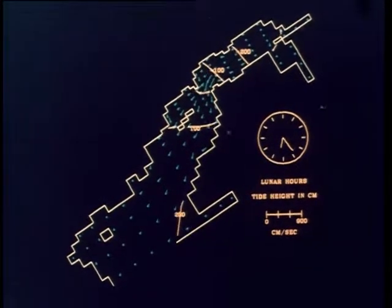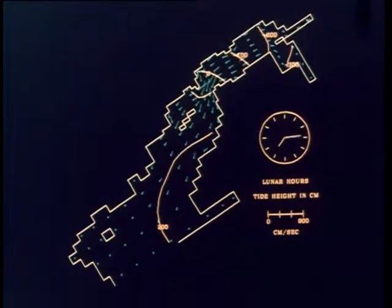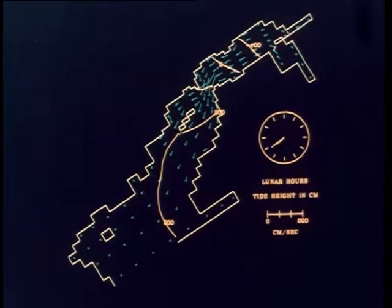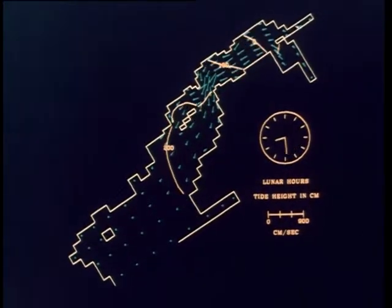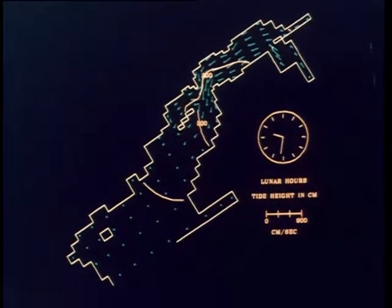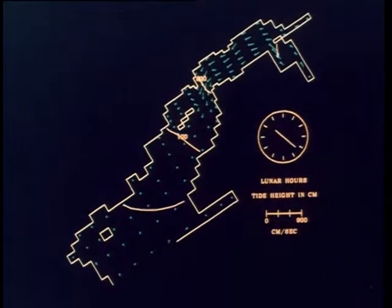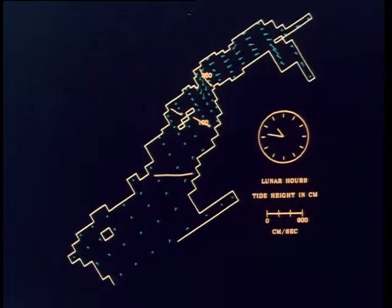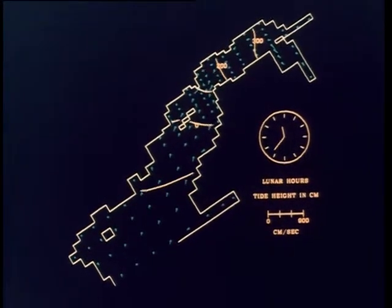For the first two cycles, at each time step, the height field is calculated and the perspective view computed. This information is then plotted on a cathode ray tube exposed to a 35 millimeter black and white film. For the last three cycles, at each time step, contours are computed and photographed. Then the vectors are computed and photographed. Finally, a 35 millimeter color film is made from the black and white film.